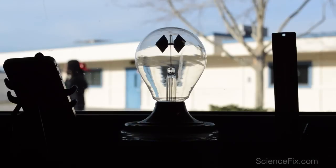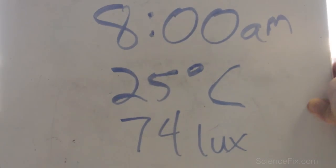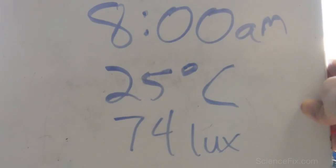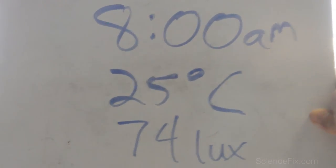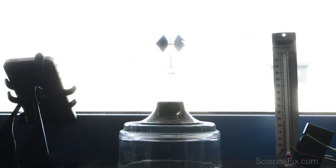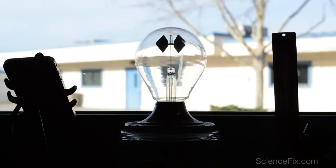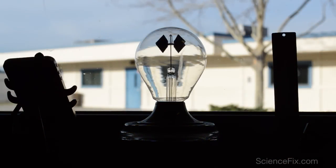We first see the radiometer at 8 a.m. The temperature is 25 degrees Celsius and it's 74 lux of light. A lux is one lumen of light over a square meter. And there's no spinning.